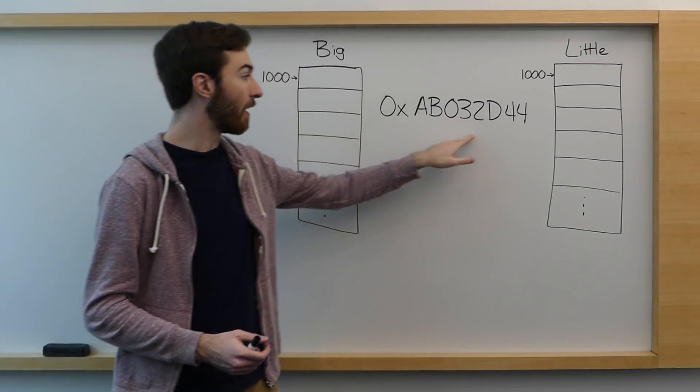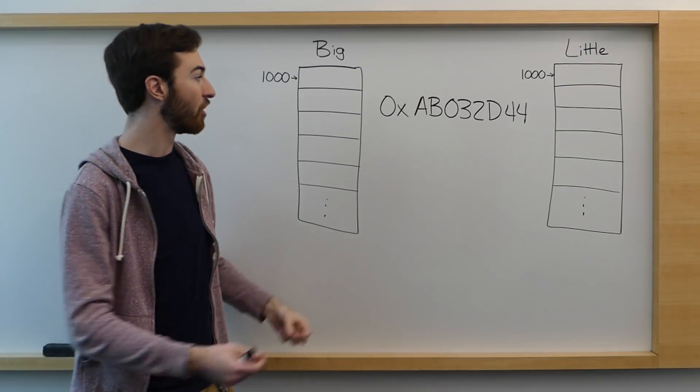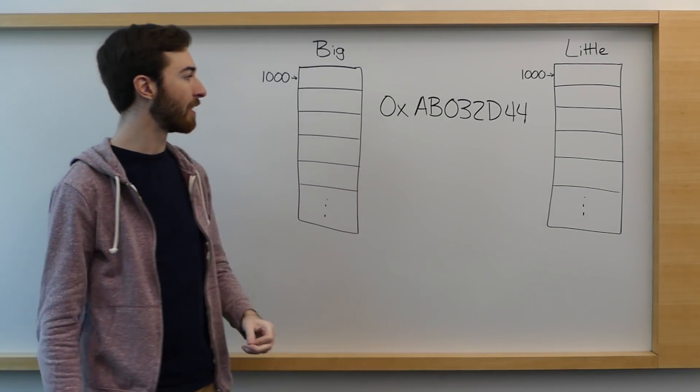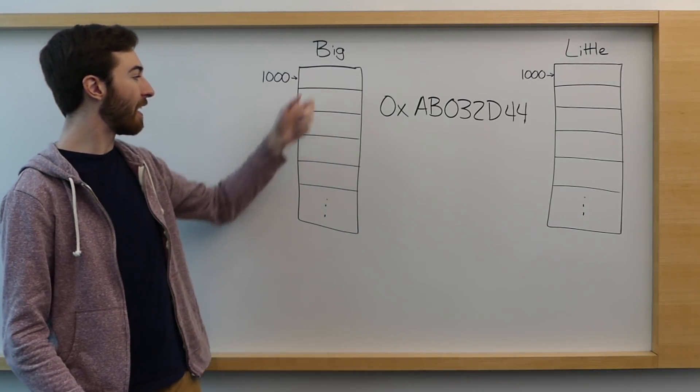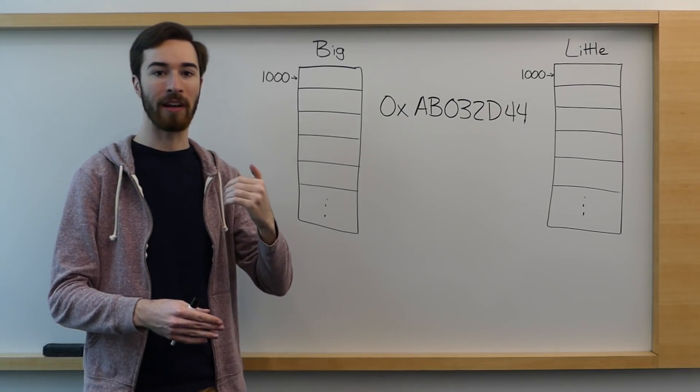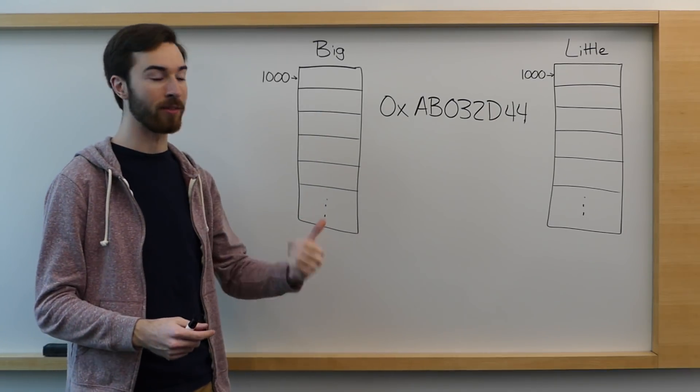So if we want to store something that's larger than a byte, say an integer like this integer right here represented in hex, we need to decide in what way we store it when we actually store it in a byte addressable system.